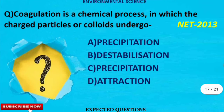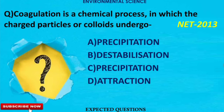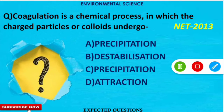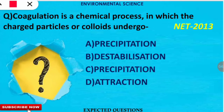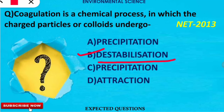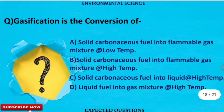The next question is: coagulation is a chemical process in which charged particles or colloids undergo which of the following reactions? The correct option is option B — these colloids or charged particles undergo destabilization, and that is why coagulation is formed.